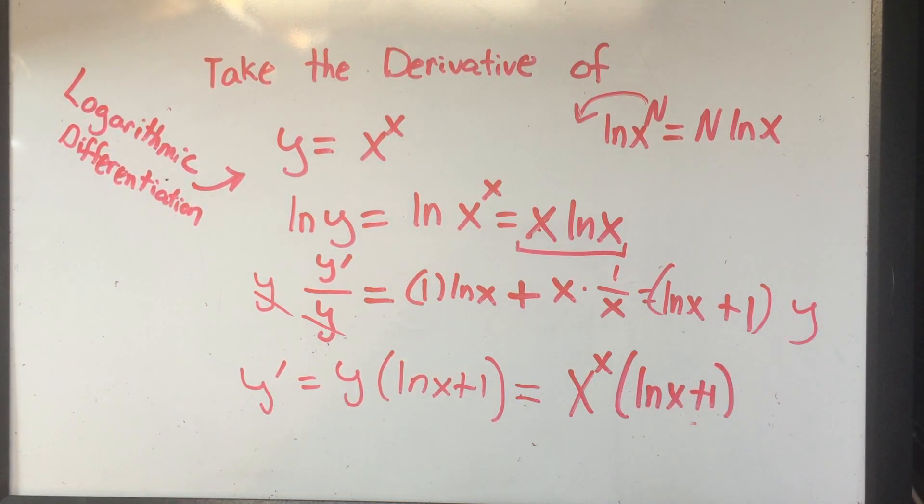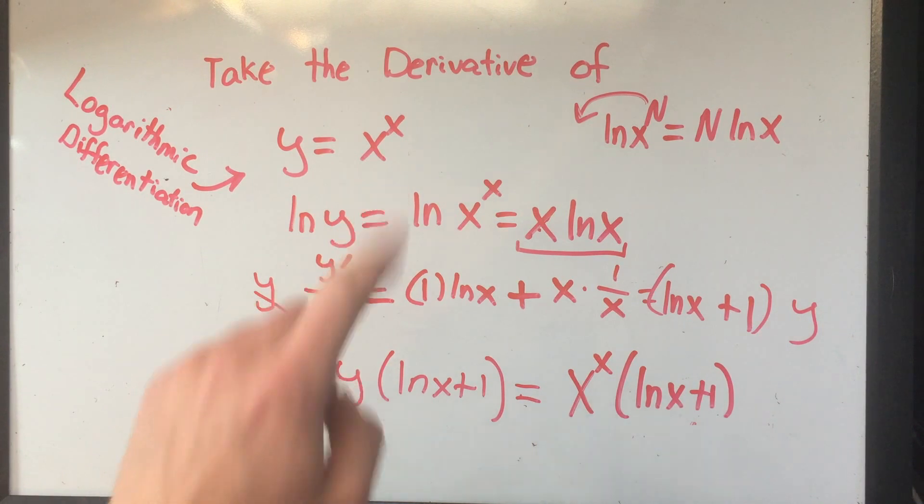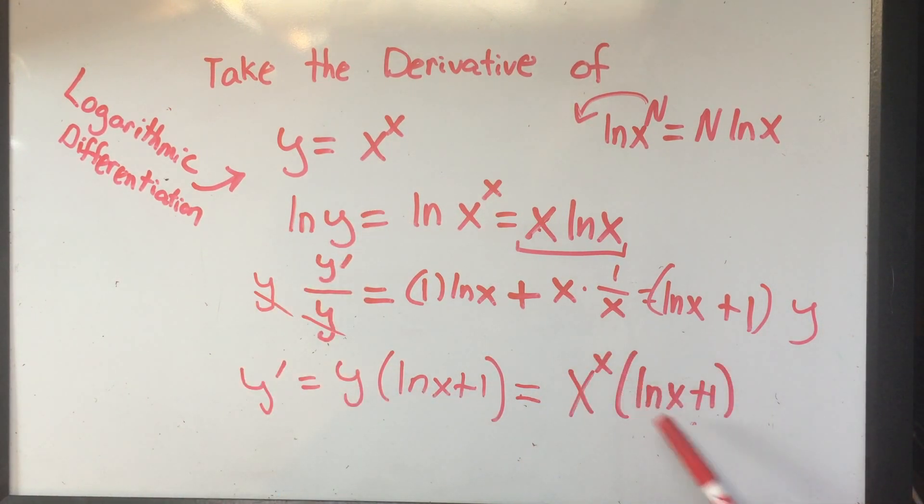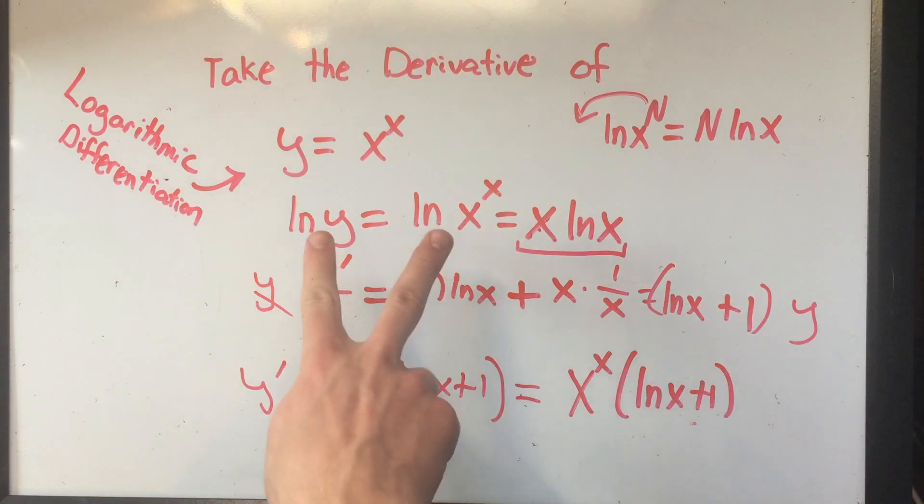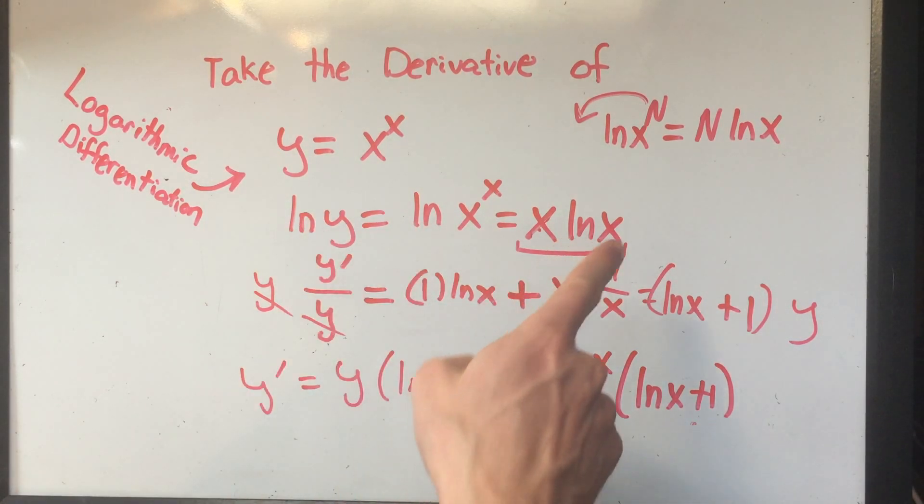Hey, there you go. So the derivative of x to the x is x to the x times the quantity ln of x plus 1. That's how you do logarithmic differentiation. You take the log of both sides, you bring down the exponent, and you take the derivative of both sides.